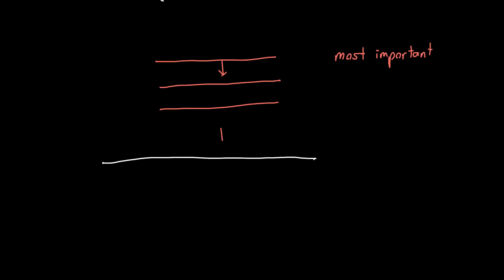If this wave is propagating downwards with a k-vector pointing straight down, we can write various electric and magnetic field components. Let's assume the electric field is pointing towards us — we'll draw E in white — and then the magnetic field has to be pointing off to the left — we'll draw H in blue. For the incident wave, we label these HI and EI. They've got some amplitude, and the relationship between the two is just equal to the wave impedance.